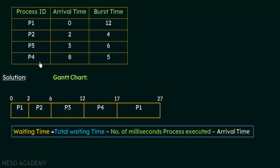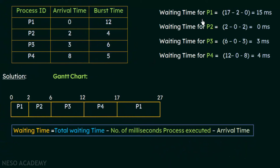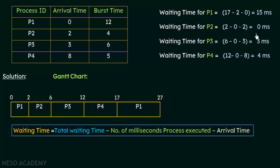For P1: the total waiting time is 17 milliseconds. P1 already executed 2 milliseconds before that, and its arrival time is 0. So waiting time = 17 minus 2 minus 0 = 15 milliseconds. For P2: total waiting time is 2 milliseconds, it never executed before that, and its arrival time is 2. So waiting time = 2 minus 0 minus 2 = 0 milliseconds — P2 got the CPU as soon as it arrived.